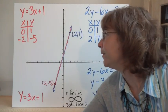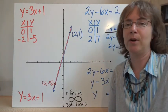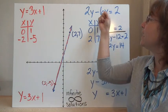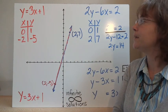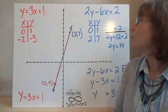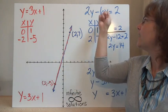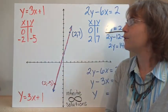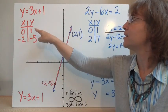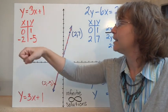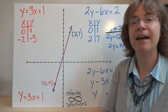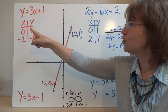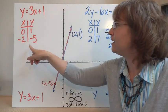Let's look at our last example. We have y equals 3x plus 1 and 2y minus 6x equals 2. Notice the second equation is not written in y-equals form, but it is still a linear equation with x and y to the first power. Choosing x equals 0 in the first equation: 3 times 0 plus 1 gives y equals 1. Choosing x equals negative 2: 3 times negative 2 is negative 6, and negative 6 plus 1 gives y equals negative 5. So I have the points (0, 1) and (negative 2, negative 5).